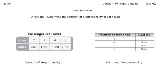Welcome back — let's go over the practice problems. Here we're talking about passenger jet travel. We have hours in one row and miles traveled in another row. Hours will be the x values and miles will be the y values. Remember, to get the unit rate it's the y value divided by the x value. You can use any one of the number pairs — I'm going to go with the first one.